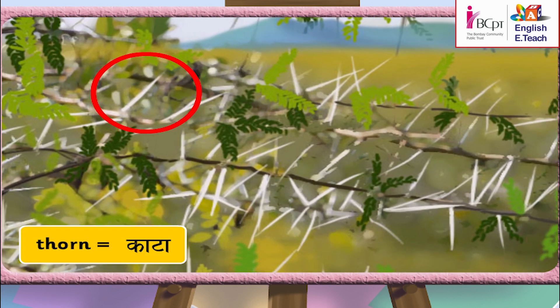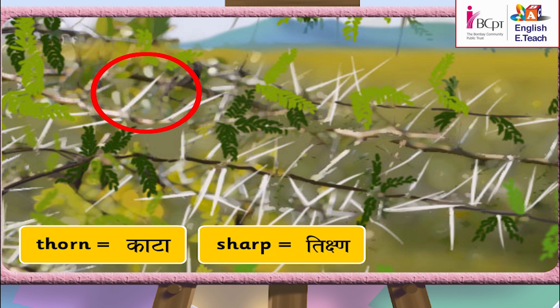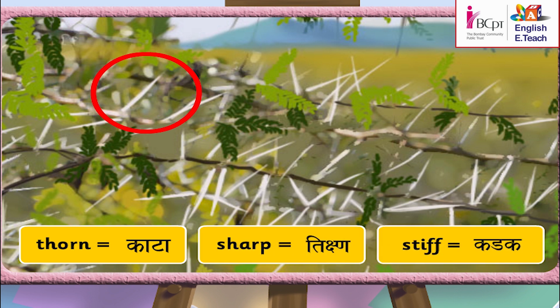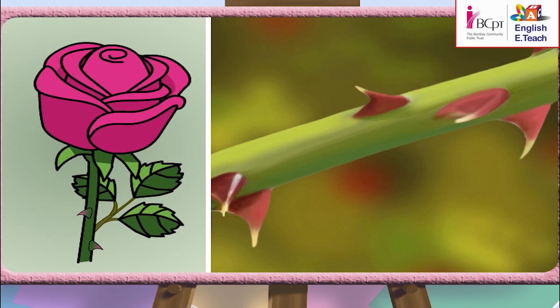In Marathi, we say 'Kata.' A thorn is small and sharp — that is 'Teekshuna.' It is also stiff — that is 'Kadak.' Even the rose plant has thorns. They can hurt when you pluck roses.